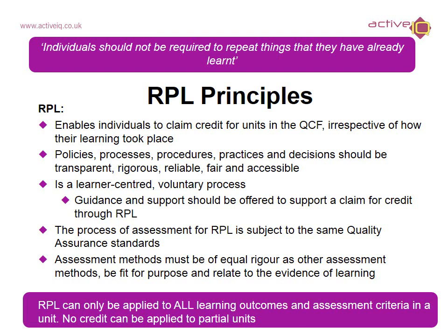Individuals should not be required to repeat things that they have already learnt. RPL enables individuals to claim credit for units in the QCF irrespective of how their learning took place. Policies, processes, procedures, practices and decisions should be transparent, rigorous, reliable, fair and accessible. RPL should be a learner-centred and learner-led voluntary process. Guidance and support should be offered to support a claim for credit through RPL. The process of assessment for RPL is subject to the same quality assurance standards. Assessment methods must be of equal rigour as other assessment methods, must be fit for purpose and relate to the evidence of learning. RPL can only be applied to all learning outcomes and assessment criteria in a unit — no credit can be applied to partial units.